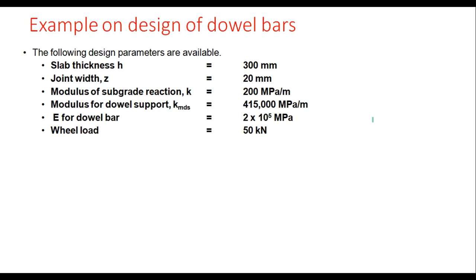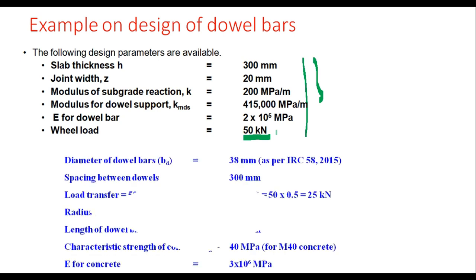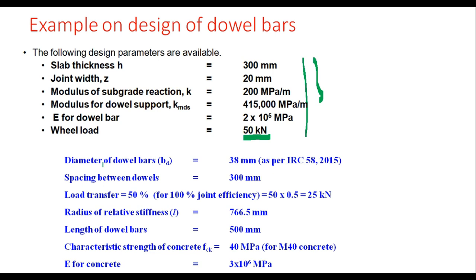Now let us take one example on design of dowel bars and tie bars. The design parameters are: slab thickness 300 mm, joint width 20 mm, modulus of grade reaction K = 200 MPa per meter, modulus of dowel support Kmds = 415,000 MPa per meter, E for dowel bar = 2×10⁵ MPa, and wheel load = 50 kN. From the IRC 58 table, the diameter of dowel bar is taken as 38 mm with spacing of 300 mm. For 100% joint efficiency, load transferred is 50%, so the total load to be transferred is 25 kN.